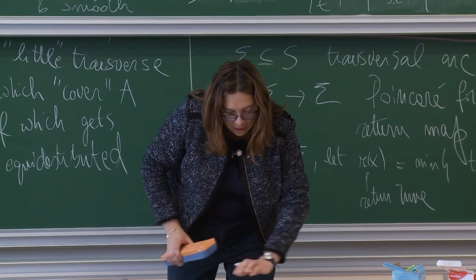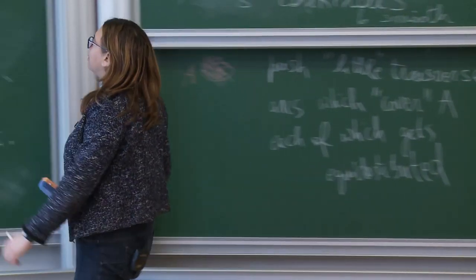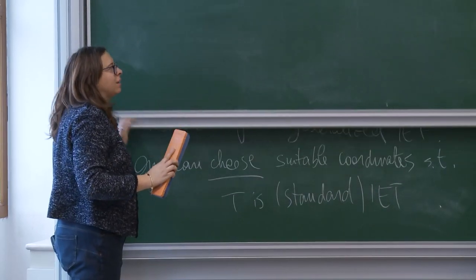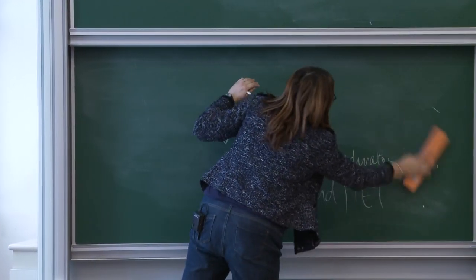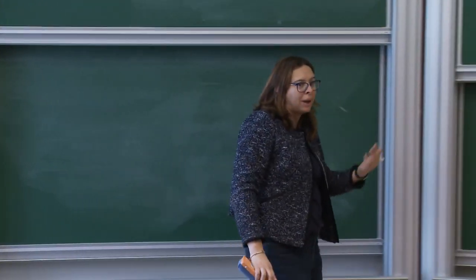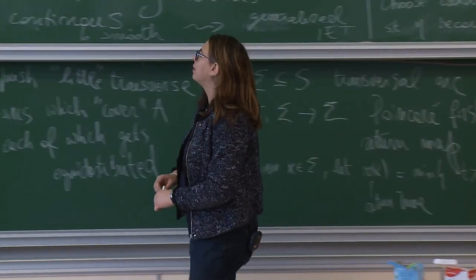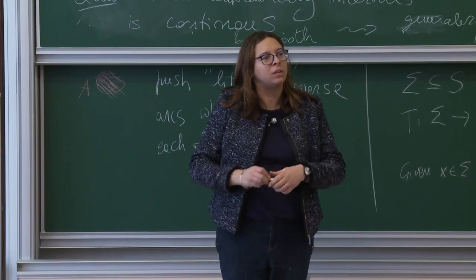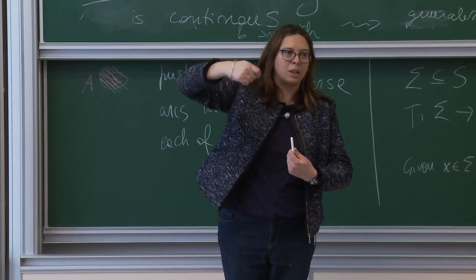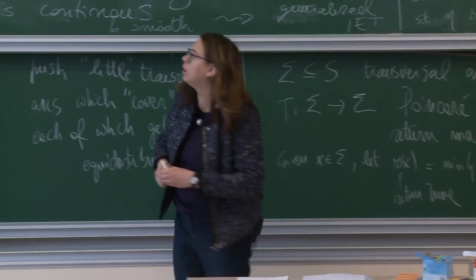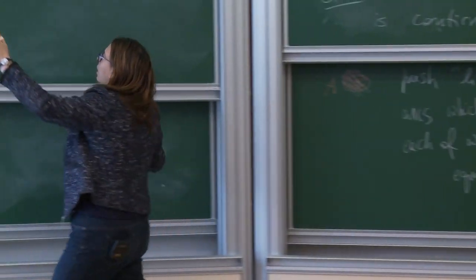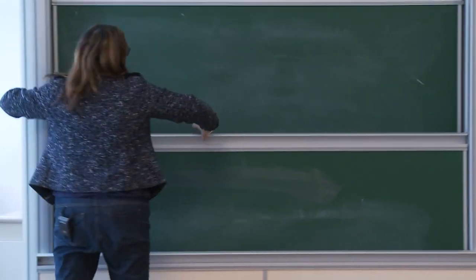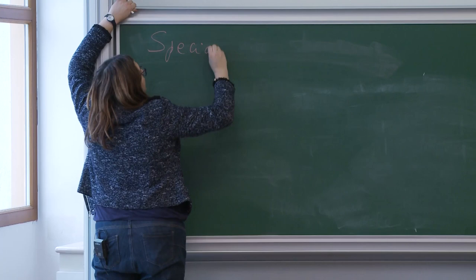So that's how we reduce to IETs. The Poincaré sections give well-understood maps, and we know a lot about IETs. Some properties automatically transfer to the flow. But to study mixing, it's crucially important to consider not just the Poincaré map but also the return time — how long it takes to come back to the section. What we want to do next is give an explicit description of the flow from the Poincaré map and the return time: the special flow representation.